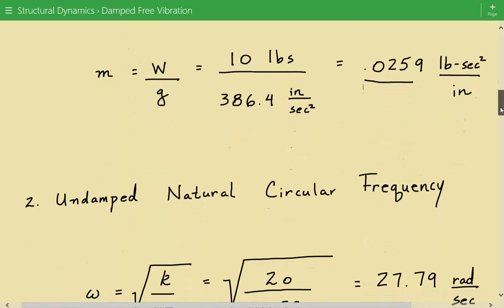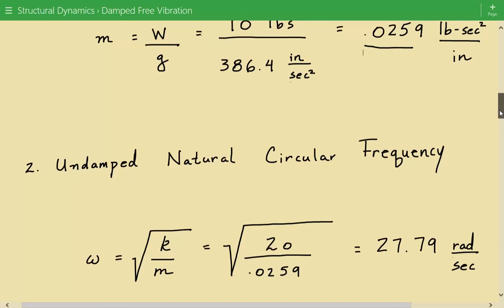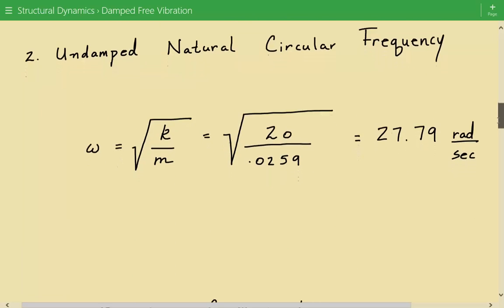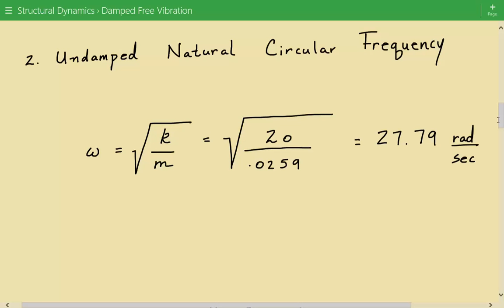Next, we're going to calculate the undamped natural circular frequency. That's equal to the square root of the stiffness divided by the mass. So our undamped natural circular frequency, omega, is equal to 27.79 radians per second.